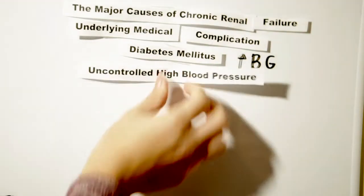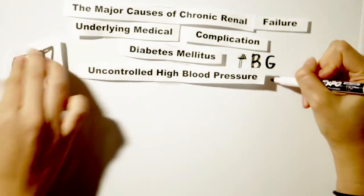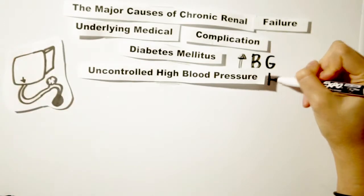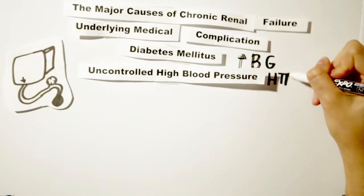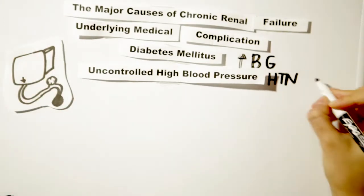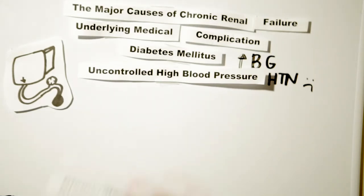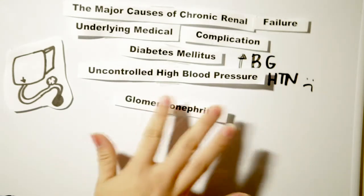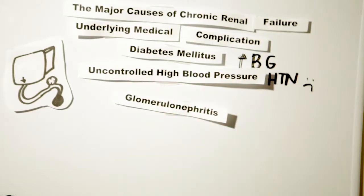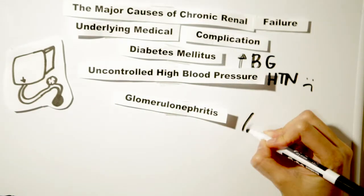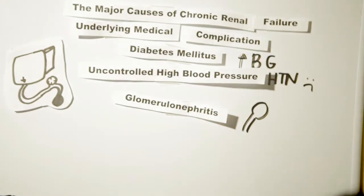Uncontrolled high blood pressure is another condition that weakens, narrows, and hardens the arteries around the kidneys. As a result, the supply of oxygen and nutrients to the nephrons is reduced or stopped, leading to failure of function. Another condition commonly causing chronic kidney disease is glomerulonephritis, which is the inflammation of the glomeruli or the small blood vessels of the kidneys.